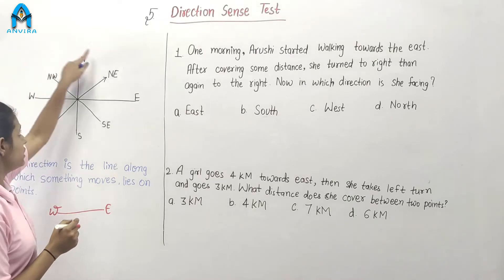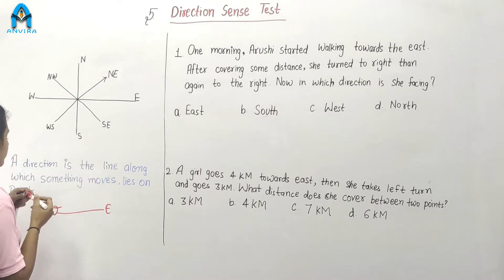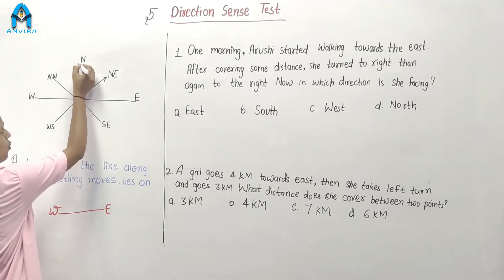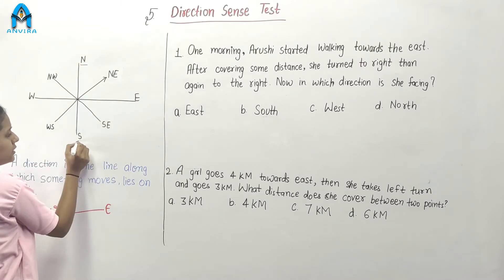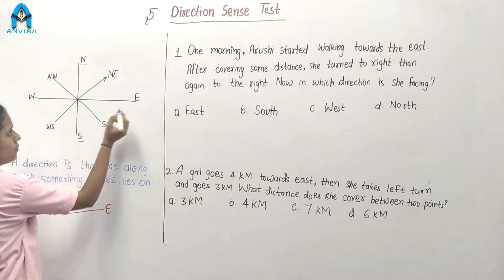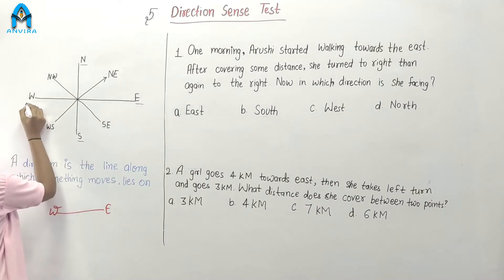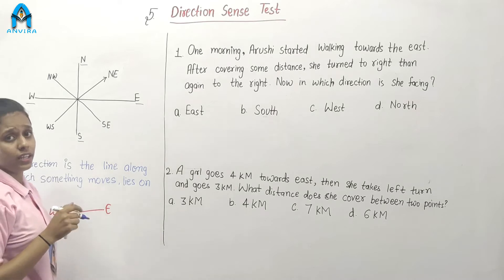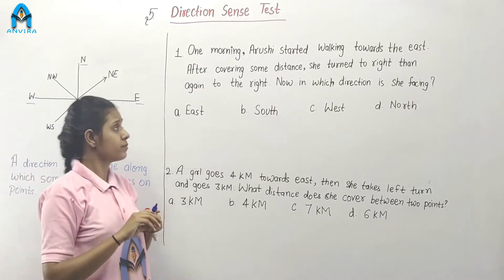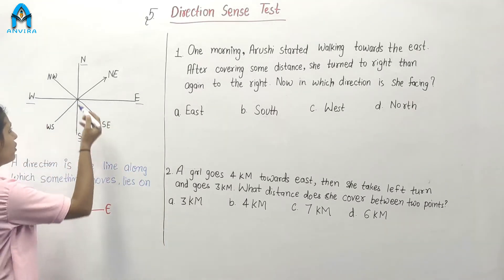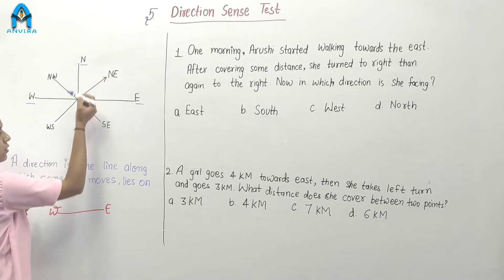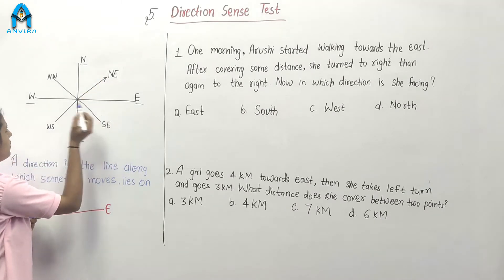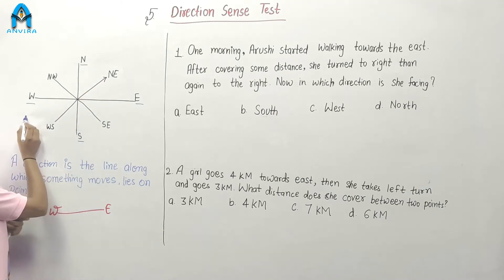Now, we have a direction chart. This is north, south, east, west. There are mainly four directions. Which are the four directions? North, south, east and west.